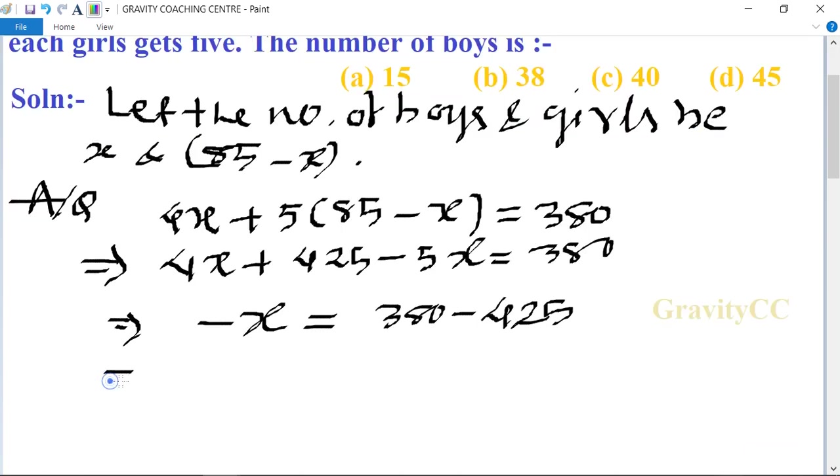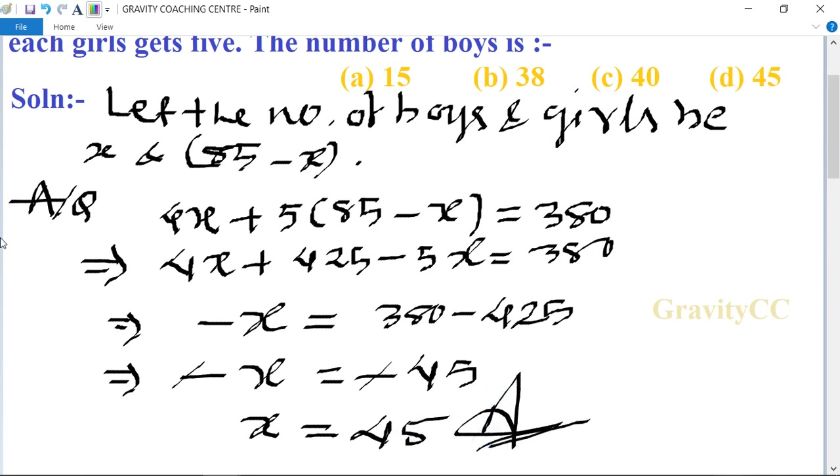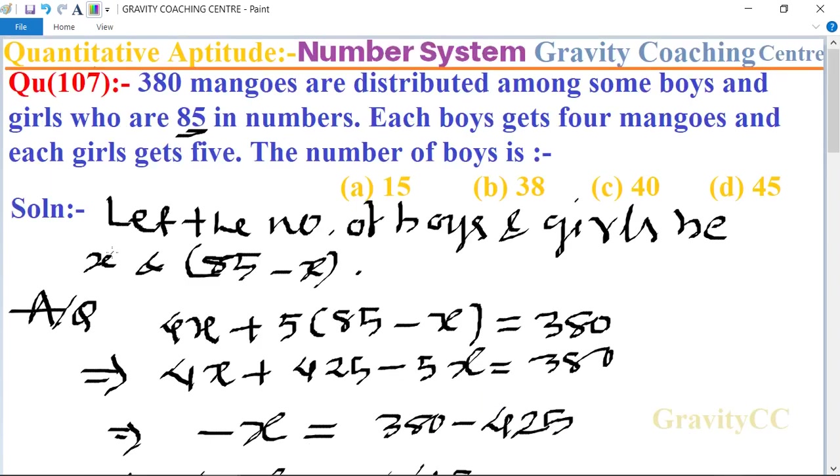minus x equals 380 minus 425, so minus x equals minus 45. Minus and minus cancel, so x equals 45, which is the required number of boys. So option D is the right answer.